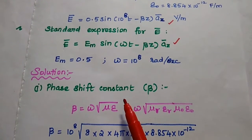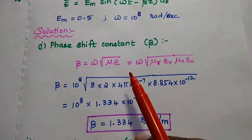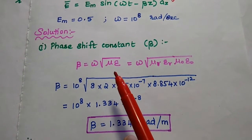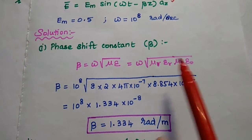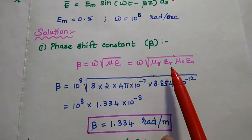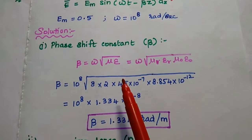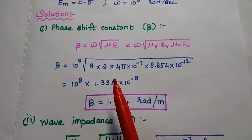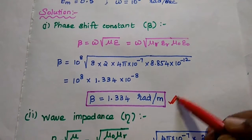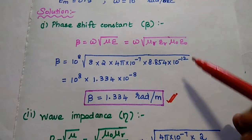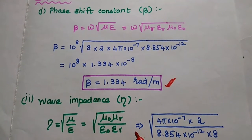Next, we find the phase shift constant beta. Using beta = ω√(με) = ω√(μ_r μ_naught ε_r ε_naught), we substitute omega = 10⁸, mu_r = 2, mu_naught = 4π × 10⁻⁷, epsilon_r = 8, and epsilon_naught = 8.854 × 10⁻¹². Calculating using a calculator, we get beta equals 1.334 radians per meter.